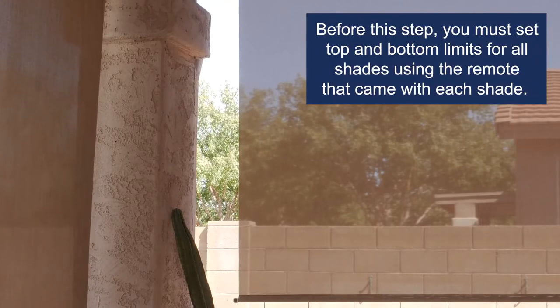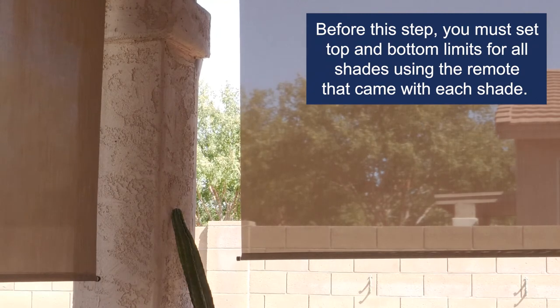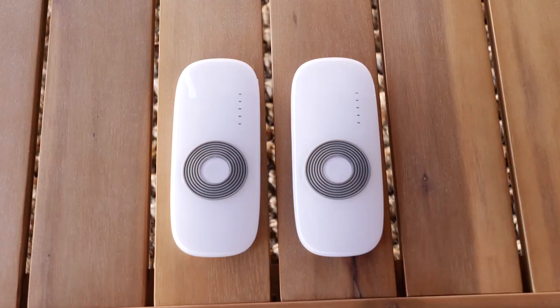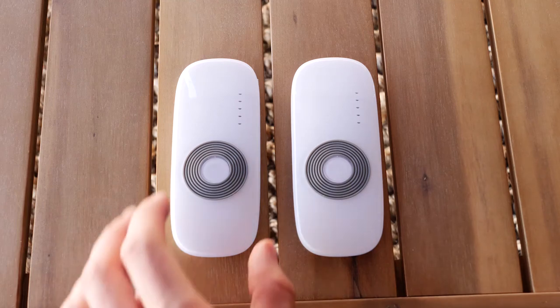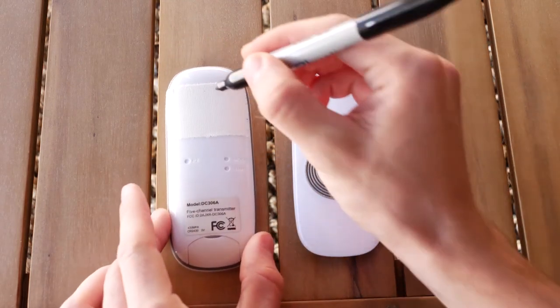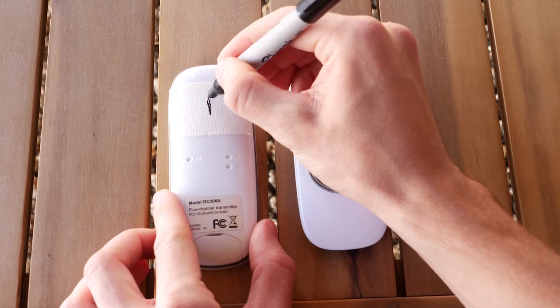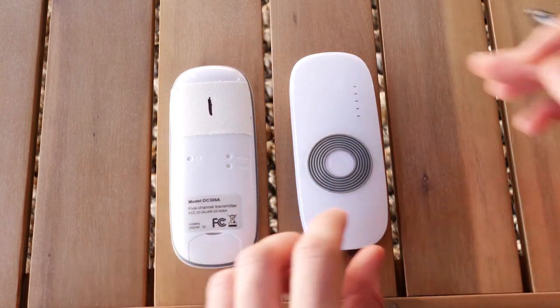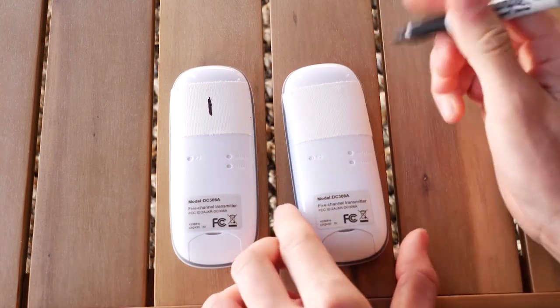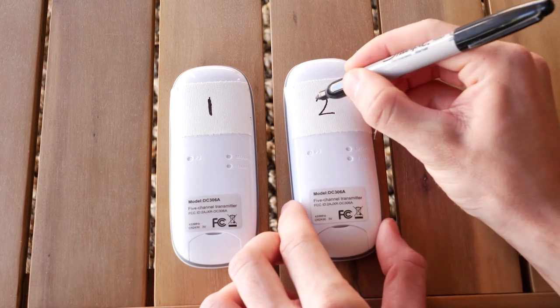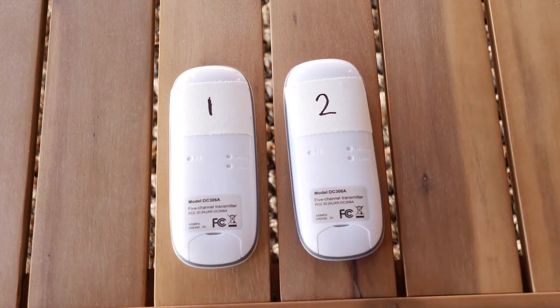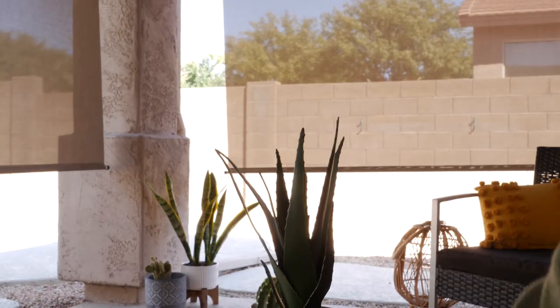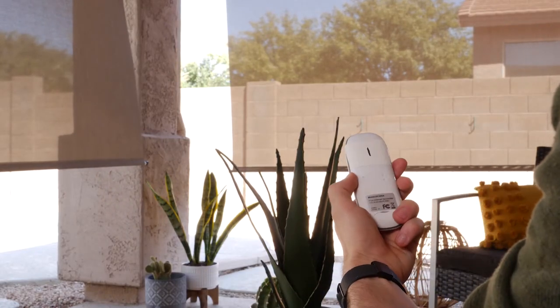Now I'm going to show you how to program your remote to operate more than one shade. Decide which remote and which shade will be your primary shade and remote. It's a good idea to mark your remotes with a simple 1 and 2 so you don't get them mixed up and you know which remote goes with which shade. Your primary shade will be set to channel 1. You'll add any other shades to channel 2, 3, 4 or 5.